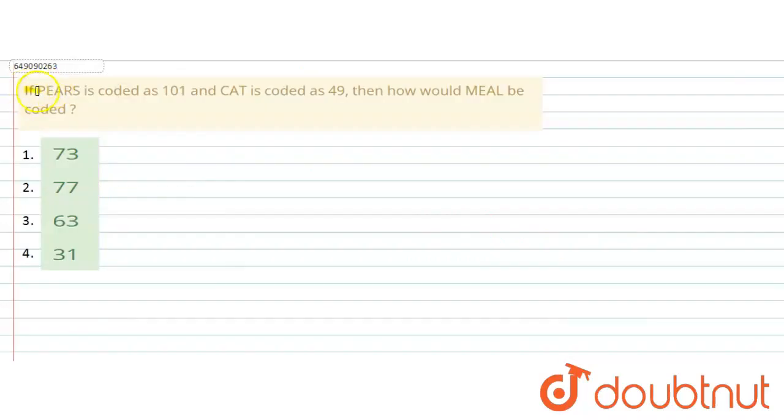The question says, if PEARS is coded as 101 and CAT is coded as 49, then how would MEAL be coded? So here you can see the opposites and place values.